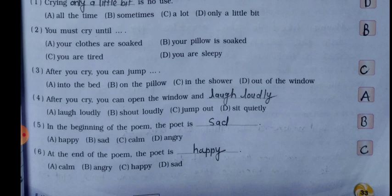Fifth: in the beginning of the poem, the poet is sad. Sixth: at the end of the poem, the poet is happy. We already covered these in the earlier questions — at the beginning the poet is sad, and by the last lines the poet becomes happy.